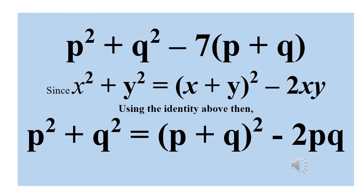From the identity: x squared plus y squared equals x plus y, in bracket, squared minus 2xy. Whenever we have an identity like x squared plus y squared, it gives us x plus y squared minus 2xy. We can use this identity to simplify p squared plus q squared: it gives us p plus q, in bracket, squared minus 2pq.